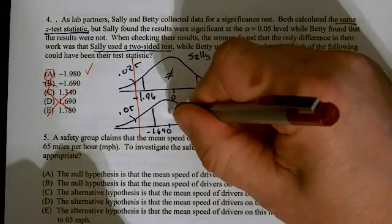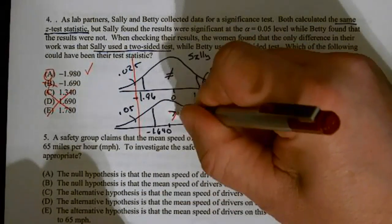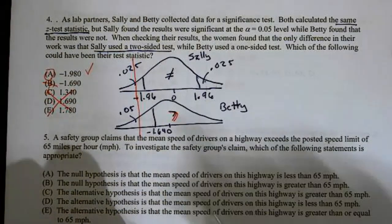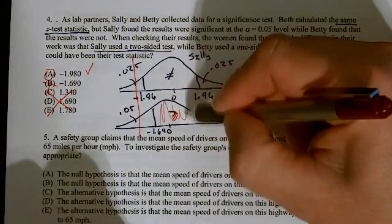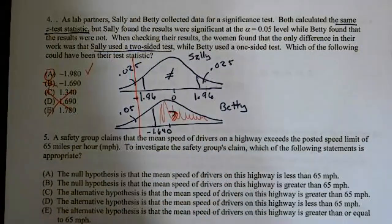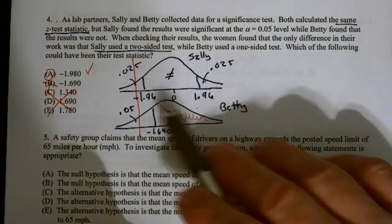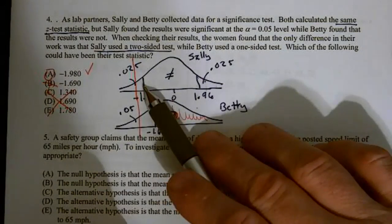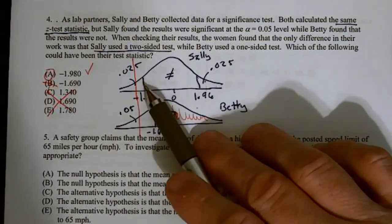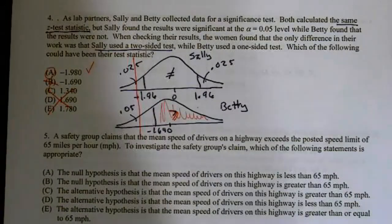If I do inverse norm of 0.05, I end up getting negative 1.64. So this would be my z-score. Well she has a negative 1.98, and you're like, well that's in a rejection zone. But the answer is, what if she ran an upper tail test? In which case, this would be her rejection zone. And because that line is not in that zone, she would not have rejected. So that's how that happened. But the easiest way to isolate it is to work on Sally's part. Number four is a pretty challenging problem, in my opinion.